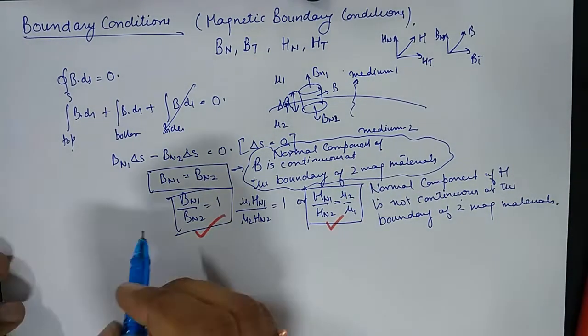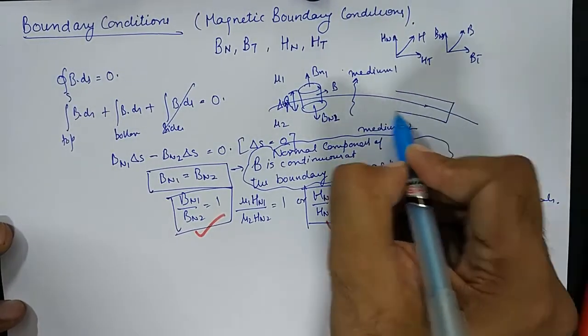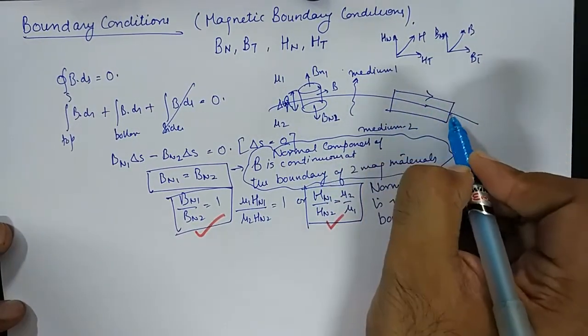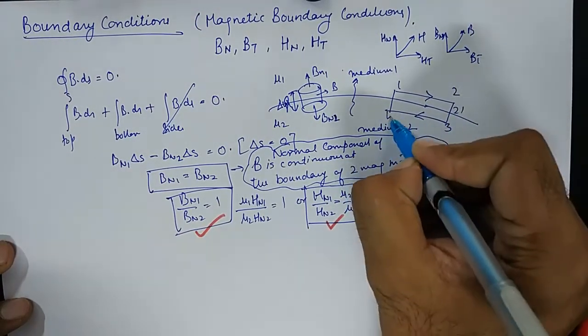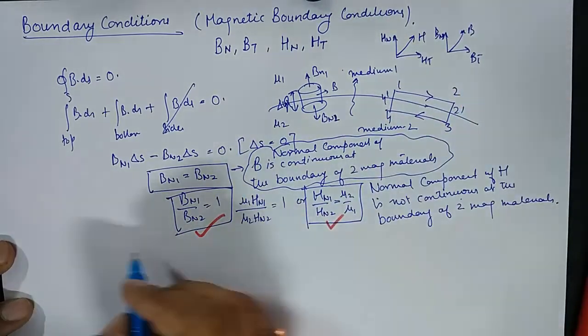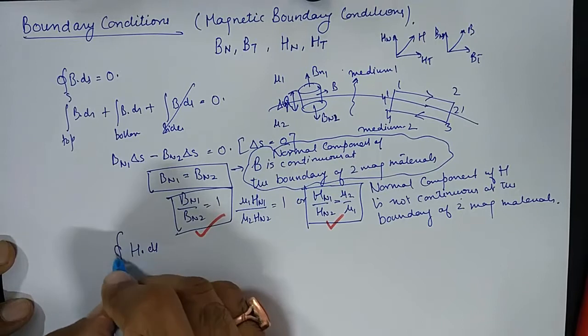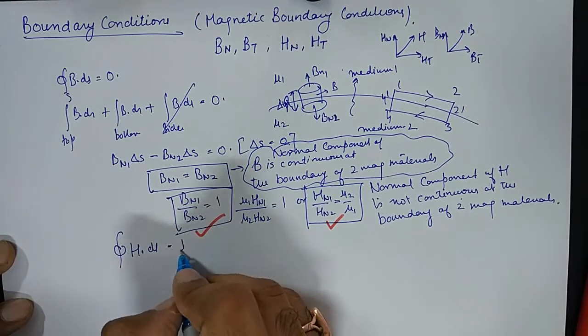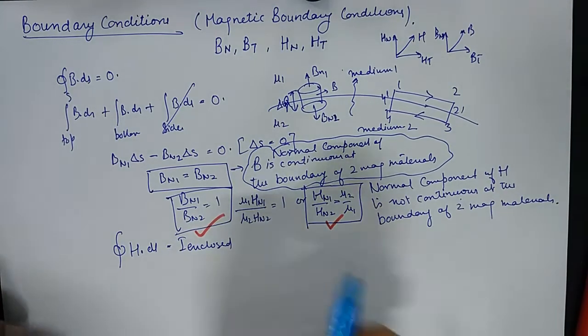And in order to find the tangential component, we will take help of this. 1, 2, 2 dash, 3, 4, 4 dash. And we will rotate H this time around. And we will take help of this equation, Maxwell's equation. H dot DL is I enclosed.